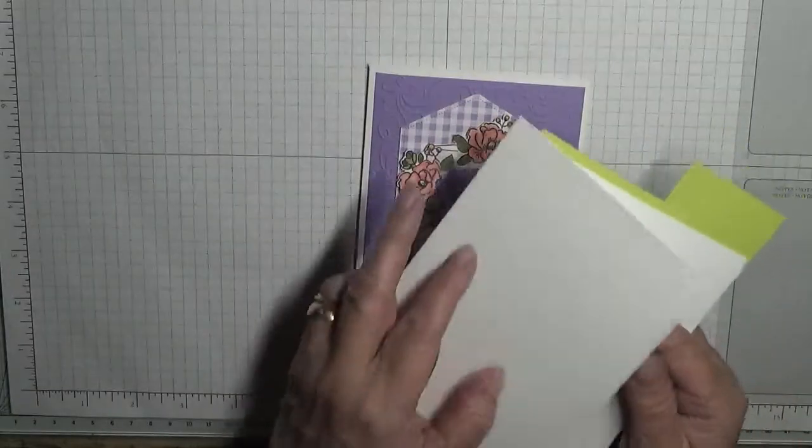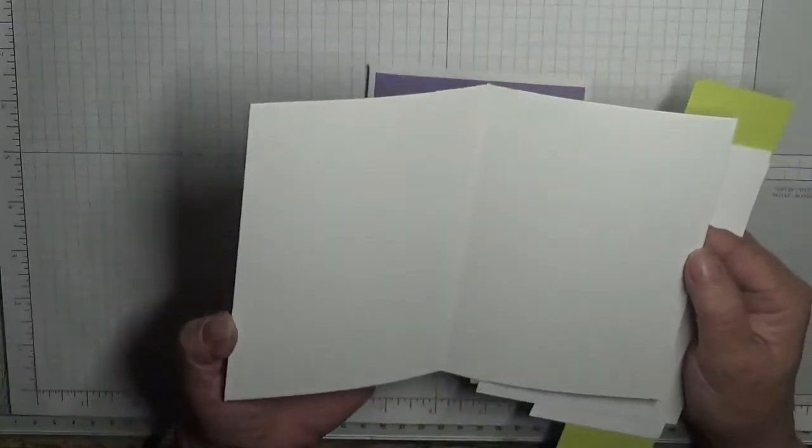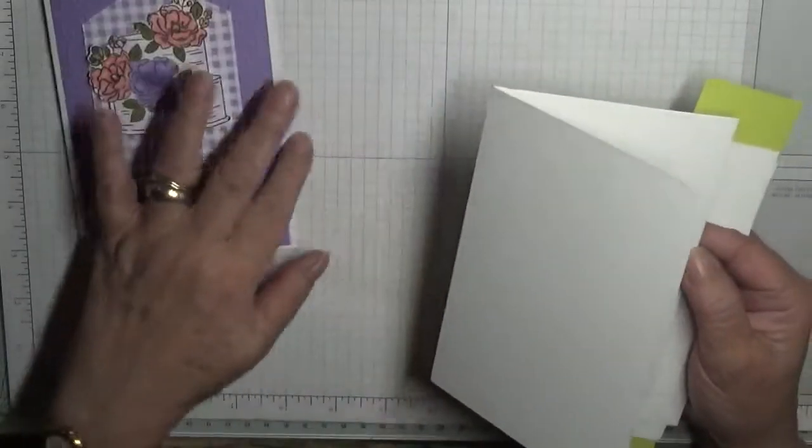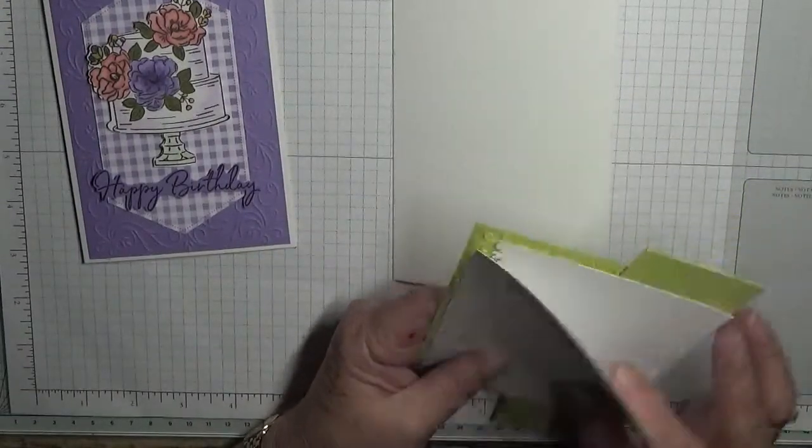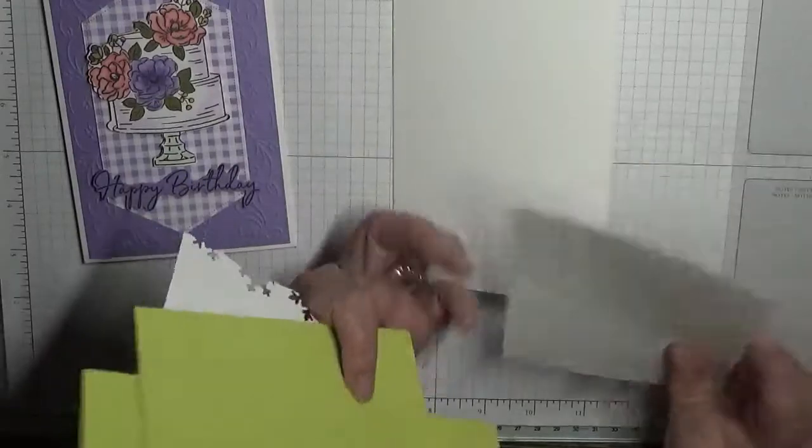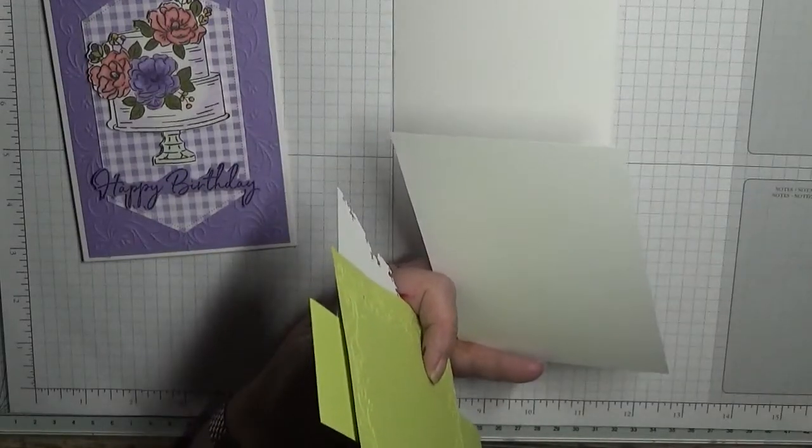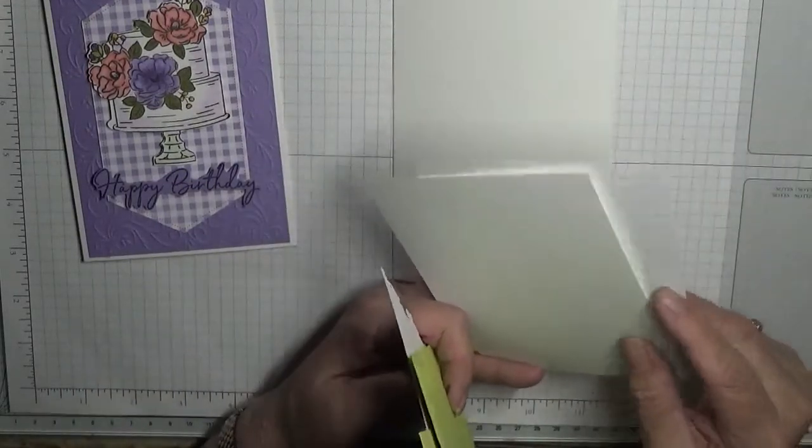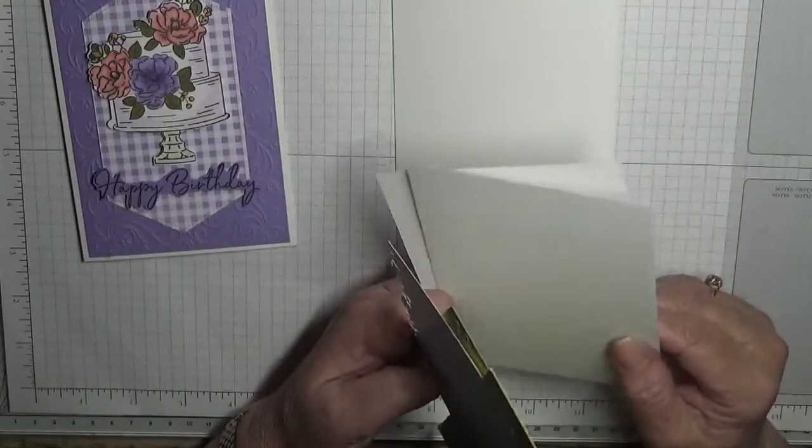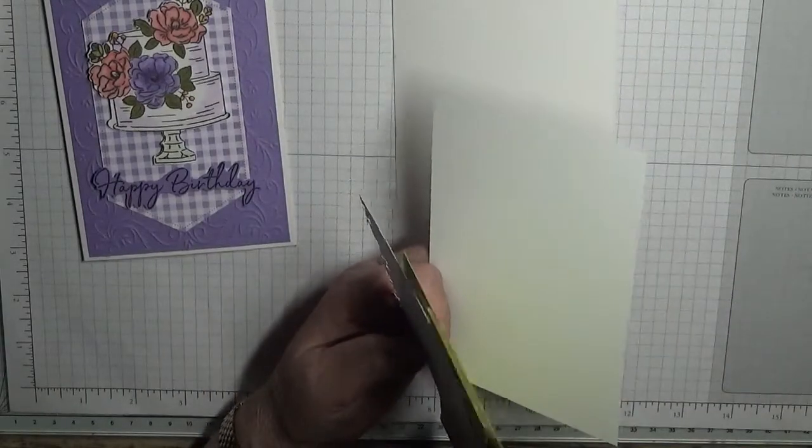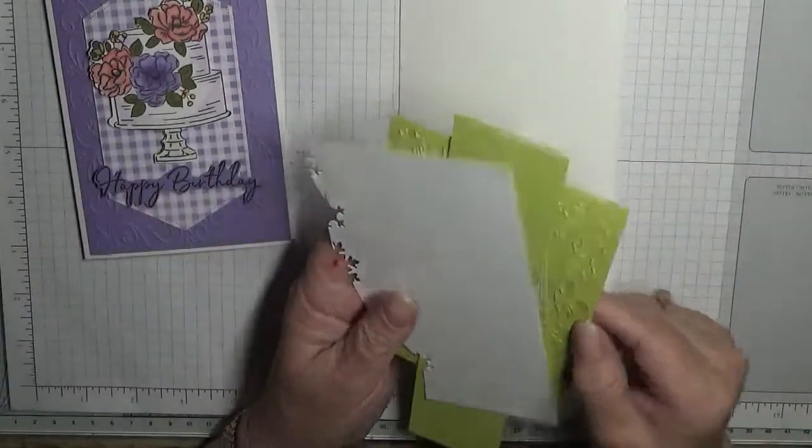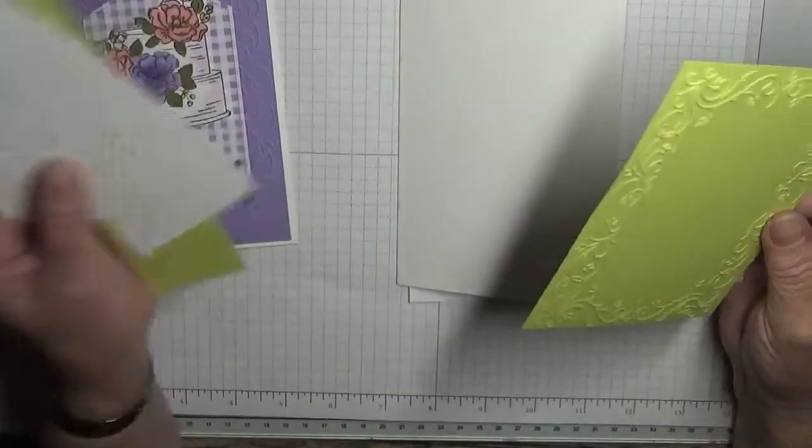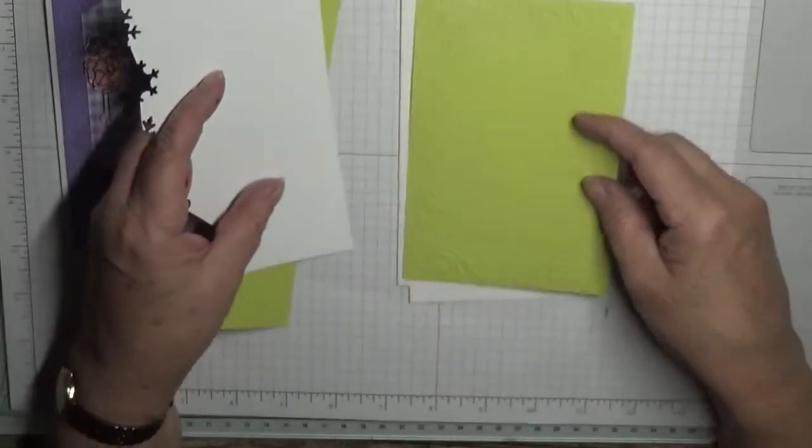To make this card you need the stamp sets, but you're also going to need a card base of eight and a quarter by five and seven eighths, scored at four and one eighth, folded in half and burnished. Two pieces of white cardstock, one for the inside. No, I only need one piece of white cardstock for the inside and a piece of, I'm going to do this in Lemon Lime Twist.